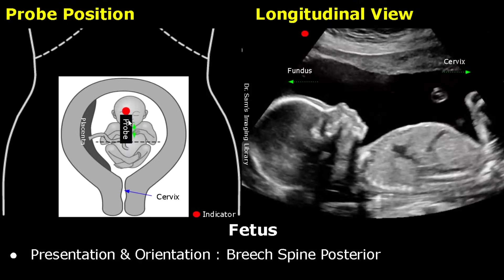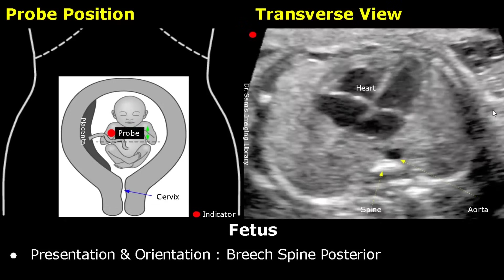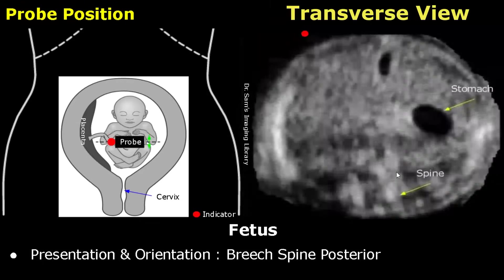The next presentation is the breech presentation, in which the fetal head is directed towards the fundus and the fetal hips are directed towards the cervix. The fetal head will be located near the mother's umbilicus, and as we move down in transverse plane, we will reach the fetal chest. This will be the heart's orientation, directed towards the right half of the image with the spine seen at the bottom. Move down towards the cervix until you locate the stomach — the spine is seen at the bottom and the stomach is also seen in the right half of the image.